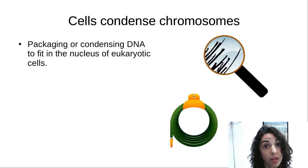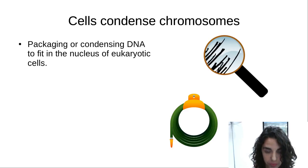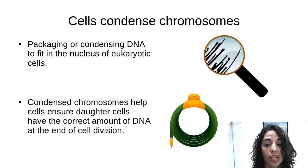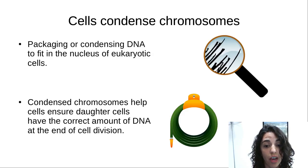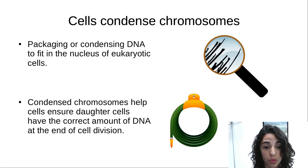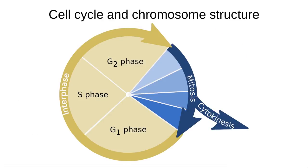A cell changes how tightly it packages or condenses its chromosomes throughout the process of cell division. For part of that process, chromosomes are highly condensed and visible under the microscope. By highly condensing its chromosomes, a cell can ensure that as it divides, the two cells that arise have the correct amount of DNA. The cell cycle is a series of steps that occur in a cell that is dividing. The eukaryotic cell cycle includes two main phases: interphase and mitosis.